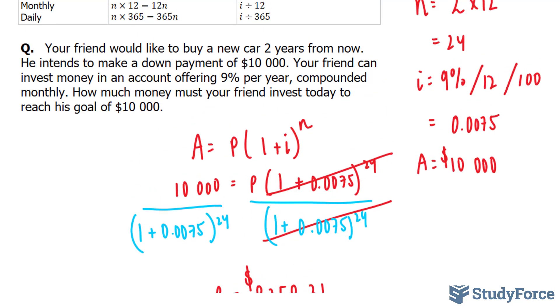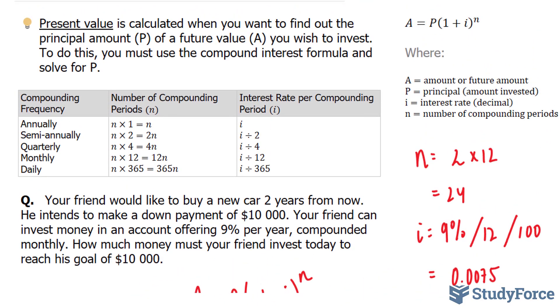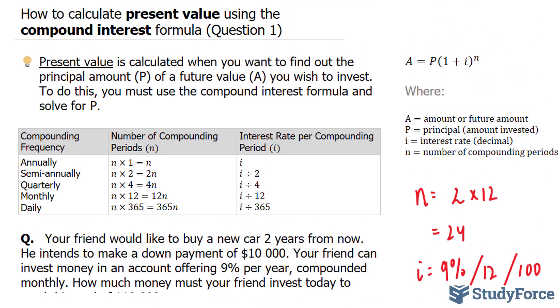So to conclude, your friend has to invest $8,358.31 today in this account in order to obtain $10,000 two years from now to purchase their car. So there you have it. That is how to calculate present value using the compound interest formula.